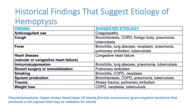Sputum production suggests bronchiectasis, COPD, pneumonia, or TB. History of trauma points to acute airway trauma or pulmonary embolism. Weight loss is an important clue for TB and malignancies. Another term is pseudohemoptysis — which includes upper airway bleed or upper GI bleed mimicking hemoptysis.